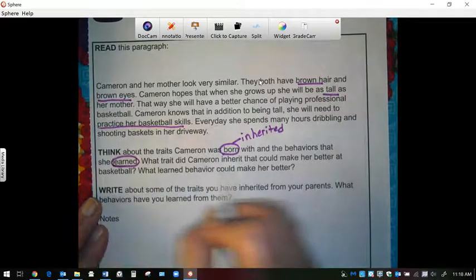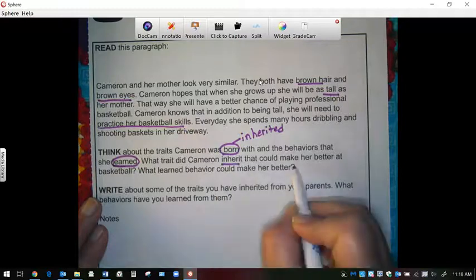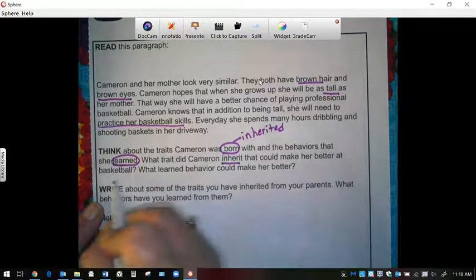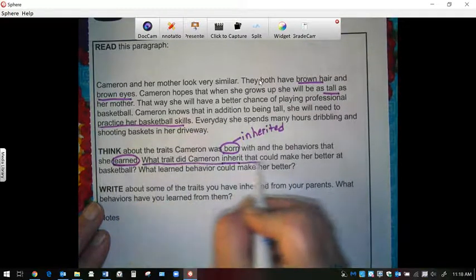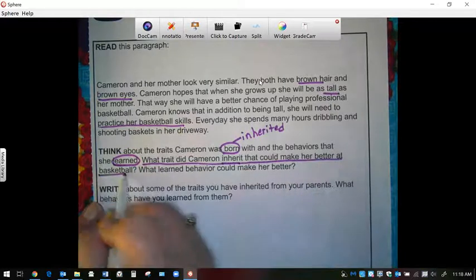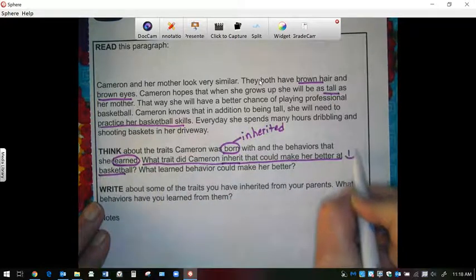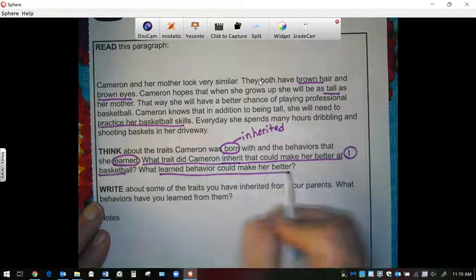What traits did Cameron inherit that could make her better at basketball? And that's question number one. And then what learned behavior could make her better?